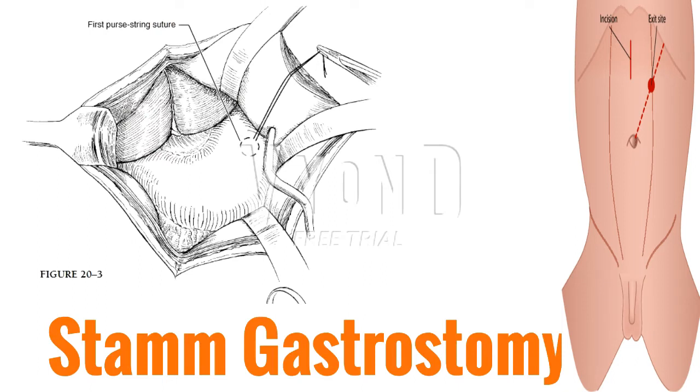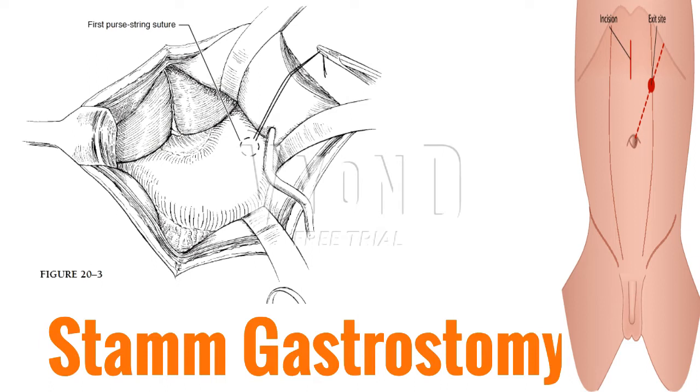Place 2-0 silk purse string suture to the anterior wall of the stomach. Figure 23. Using 2 Babcock clamps for traction, the surgeon uses cautery to create gastrotomy within the purse string suture.